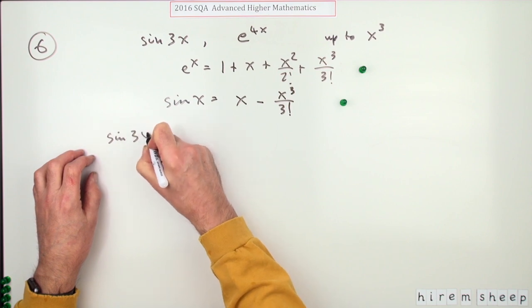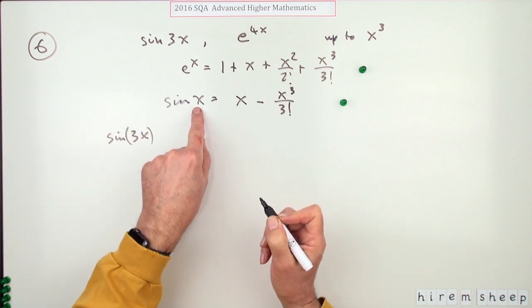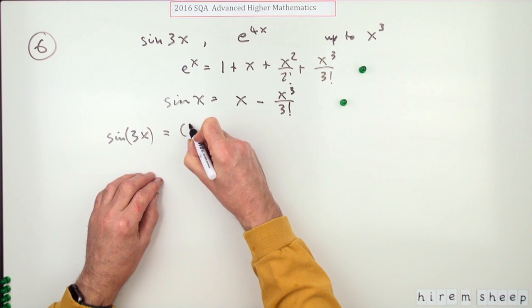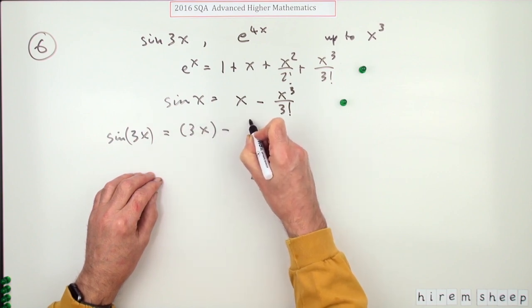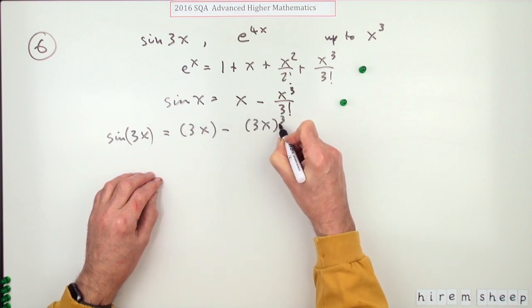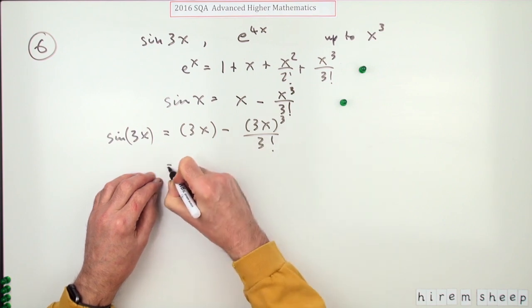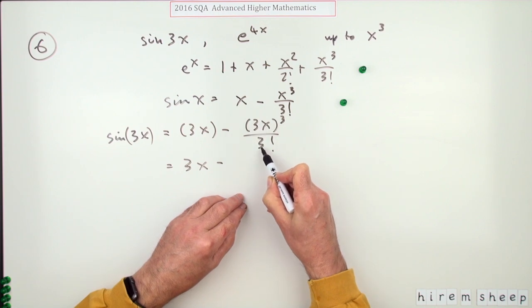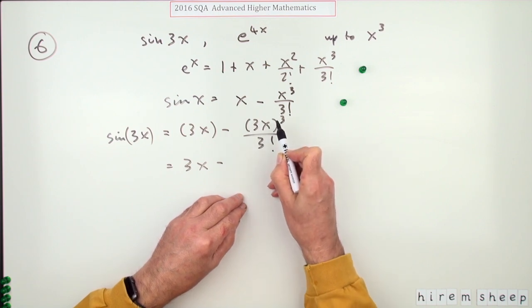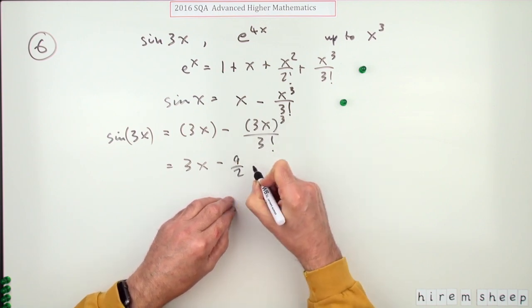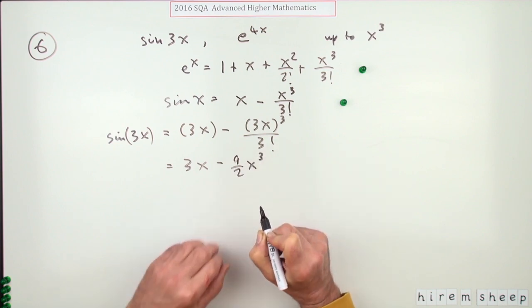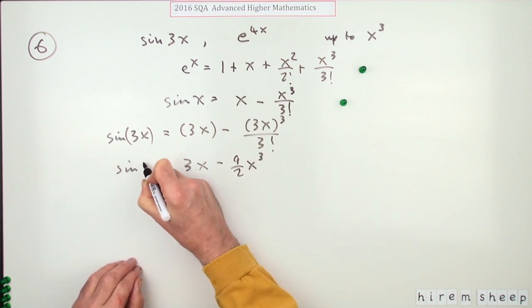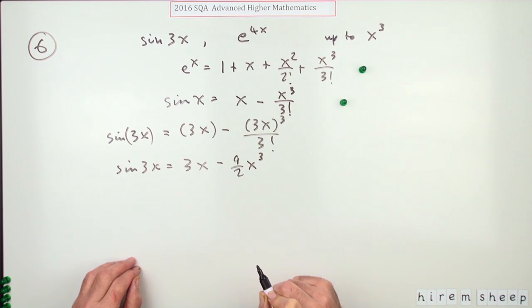Well, sine 3X simply means replacing the X's with 3X's. That'll be 3X minus 3X cubed over 3 factorial. So that'll be 3X minus, now that 3, one of those 3's, will knock out that 3 factorial, but I've still got two of them. So that'll be 9 over 2 X cubed minus 9 over 2 X cubed. Just write it again. That's sine 3X. If you do that, you get a mark.